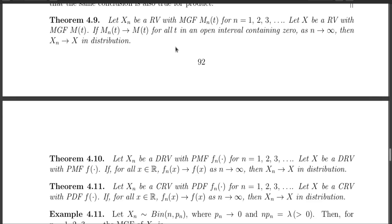The first theorem tells that if the moment generating function of Xn converges to the moment generating function of X, then Xn converges to X in distribution. Xn is a random variable having moment generating function Mn, and X is a random variable with moment generating function M. Then if Mn(t) converges to M(t) for all t in an open interval containing 0, then Xn converges to X in distribution.